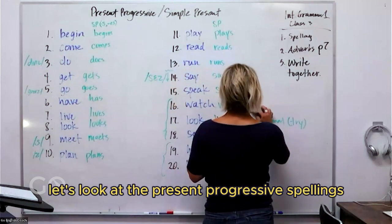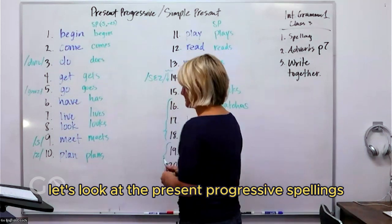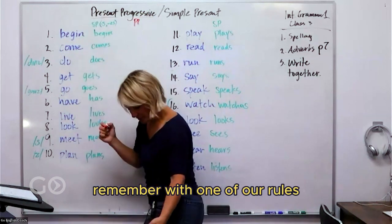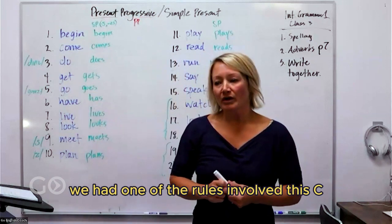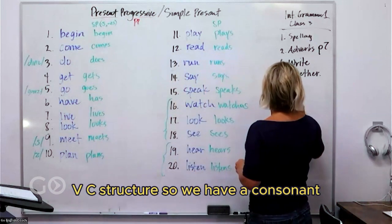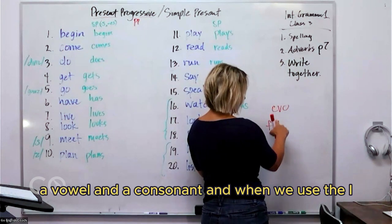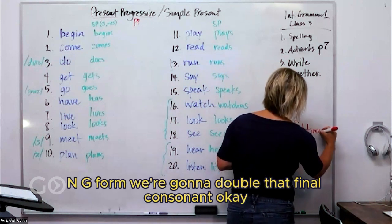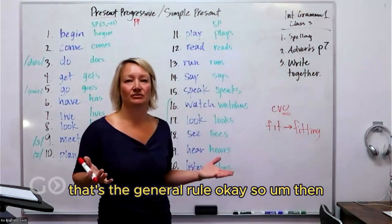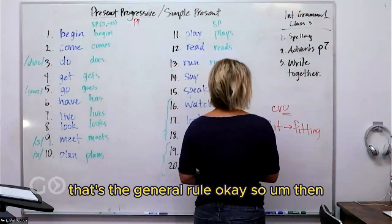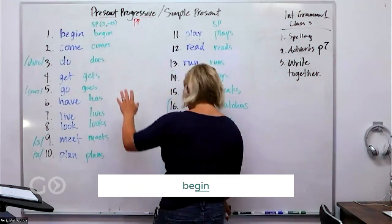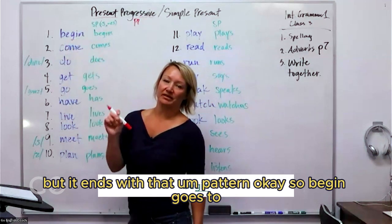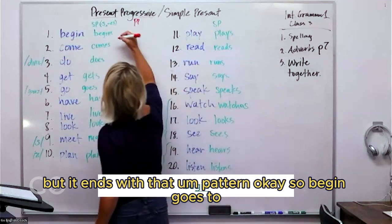Let's go back up here. Let's look at the present progressive spellings, the present progressive tense. Remember with one of our rules, we had one of the rules involved this CVC structure. So we have a consonant, a vowel, and a consonant. And when we use the ING form, we're going to double that final consonant. That's the general rule.